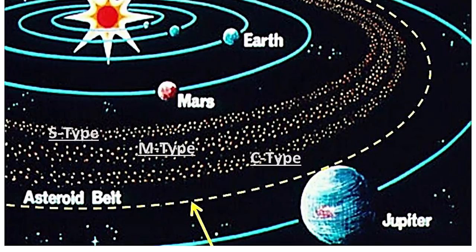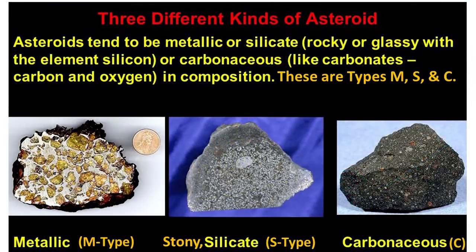Remember the main asteroid belt. There are three distinctly different types of material making up the large and small debris there, called the S-type, M-type and C-type asteroids. Some of them contain up to 20% water, with the higher water content expected at that distance from the Markland convection that was happening at the beginning. Some asteroids tend to be metallic nickel-iron or M-type. There are silicate, rocky or stony asteroids of the S-type, with a high level of silicon. Finally, there are the carbonaceous or C-type asteroids with large amounts of carbon and oxygen in their composition.